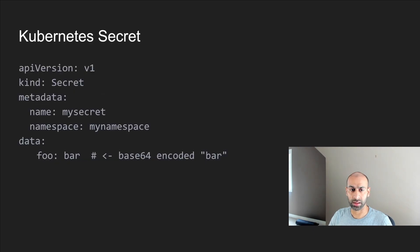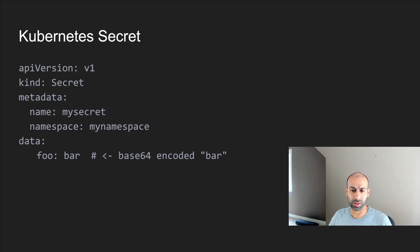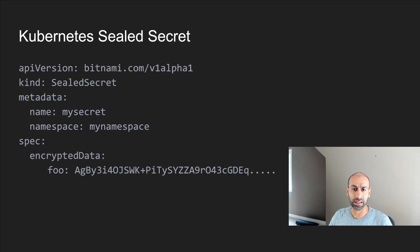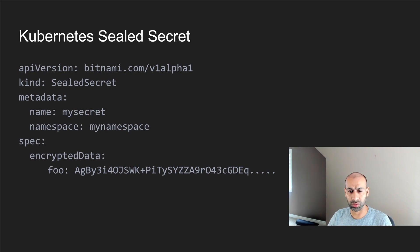When creating a secret, we give the namespace, the key, and the value. The value we provide is a base64 encoded value — anybody could base64 decode it and see the plain text. But if you're using sealed secrets, the value stored is an encrypted value. Even if this value is shared, nobody could decrypt it. Only the cluster is allowed to decrypt it.